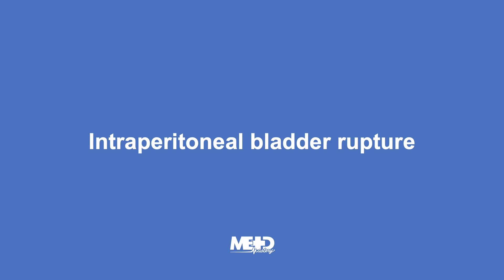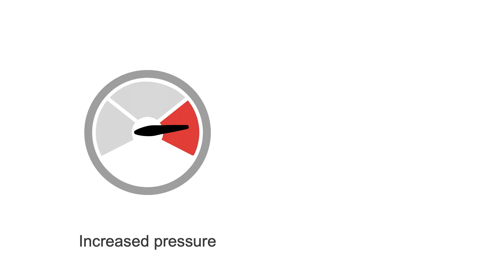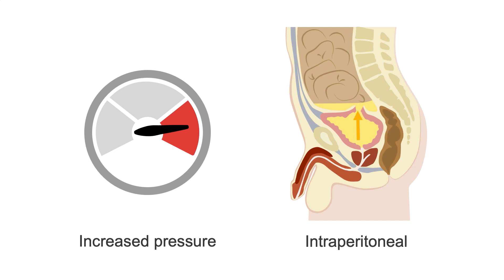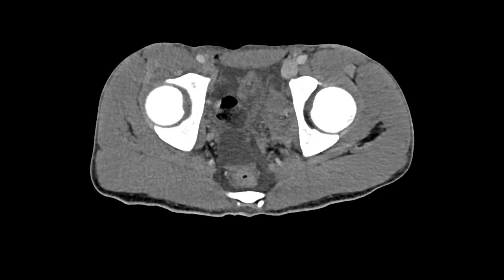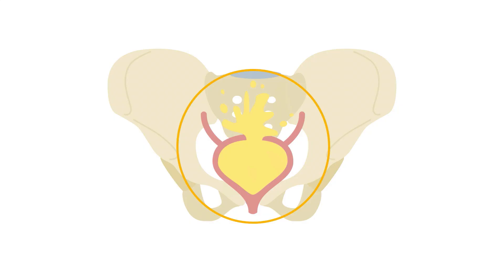Intraperitoneal ruptures are more often associated with sudden increases in pelvic pressure. This can cause the dome of the bladder to rupture and urine will leak into the peritoneal cavity. Intraperitoneal bladder rupture can be surprisingly difficult to diagnose because sometimes the only indication of bladder injury on the trauma scan may be unexplained simple fluid in the pelvis. Unexplained ascites on a trauma CT should prompt you to consider bladder rupture.